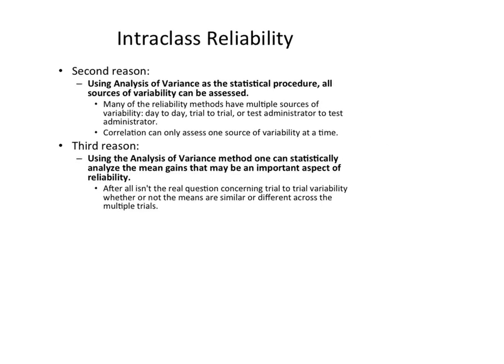The second reason is that all sources of variability can be assessed. In correlation, we can only ever measure an x-y variable at one time. With ANOVA, you can put more than one variable into the analysis at once and have more than two levels. We could look at test-retest, day-to-day, trial-to-trial, and inter-rater reliability all at the same time, whereas correlation can only do one at a time. Every additional analysis increases the chance of committing a type 1 error and potentially concluding a test is inconsistent when it actually is.